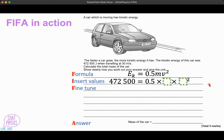So we know that the energy is 472,500 joules. And we don't know what m is, but we do know that the speed is 30. So next we come to the fine tune.